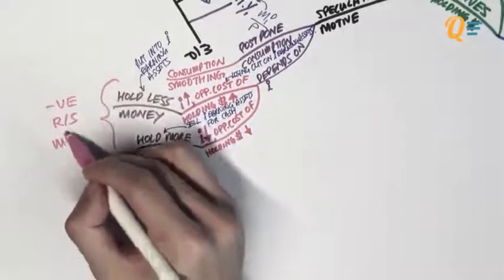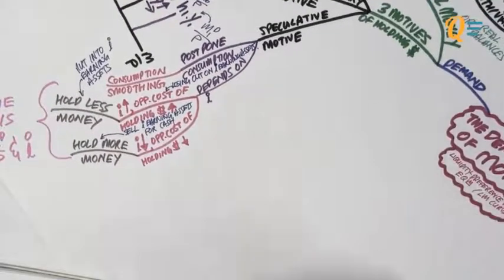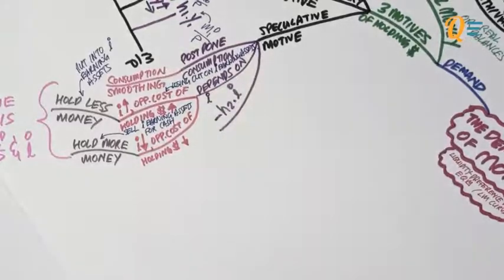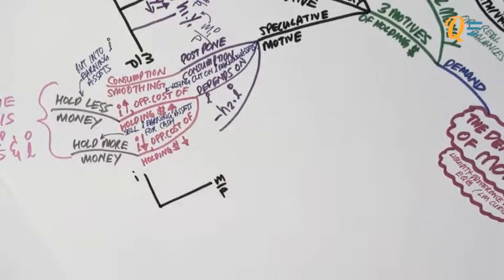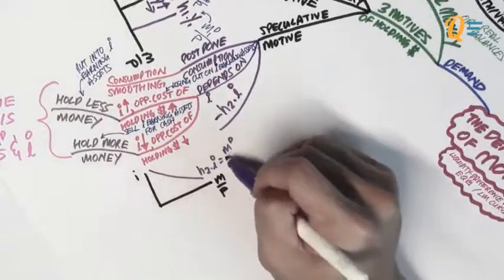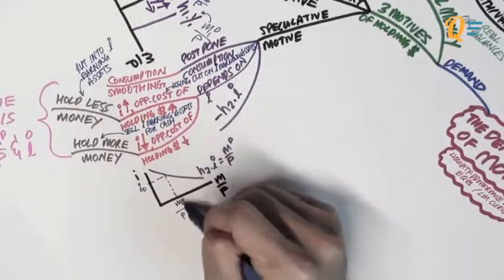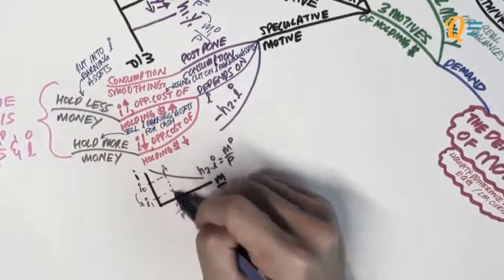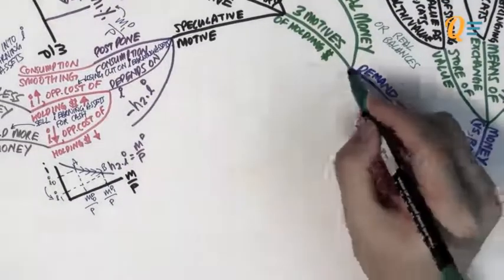As you can see from this explanation, there is a negative relationship between real money demand and nominal interest rates, which we denote as −h2 × i. The minus sign reflects that negative relationship. On the graph, this looks like a downward-sloping curve. When interest rates fall, people hold more money; when interest rates rise, people hold less. This is a movement along that curve.